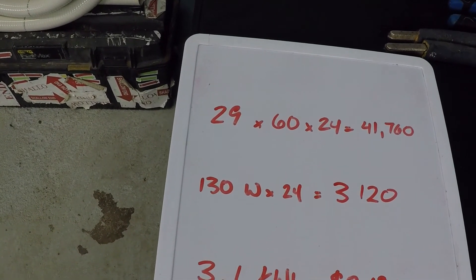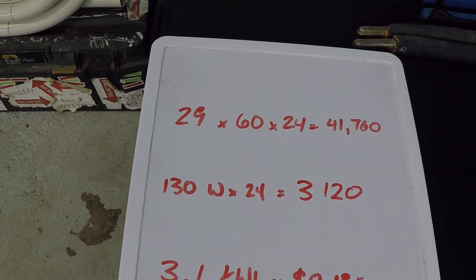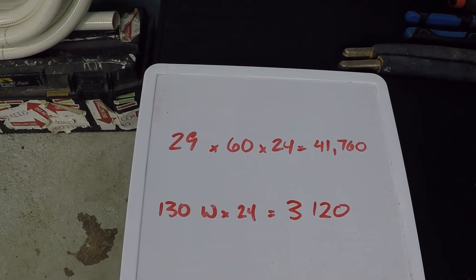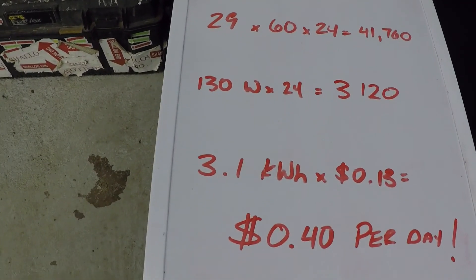And so let's take a look at the power equation for that. 130 watts times 24 hours in the day is just over 3100 watts. 3.1 kilowatts is what I calculated that.